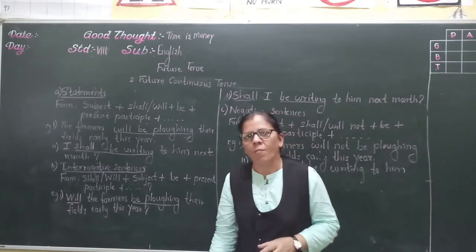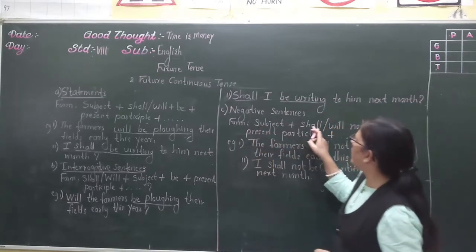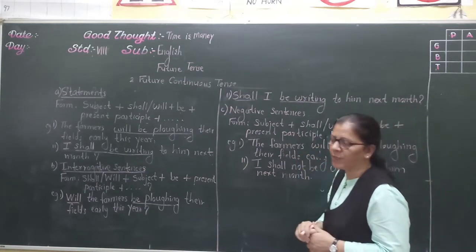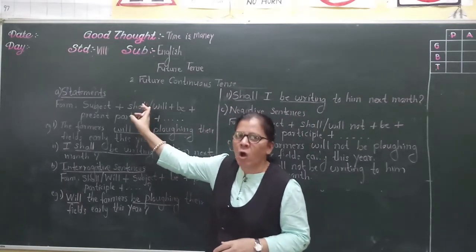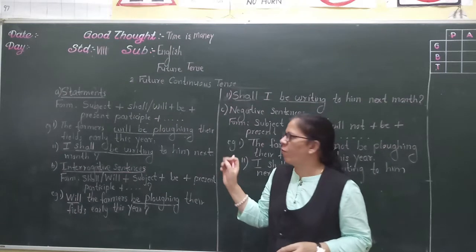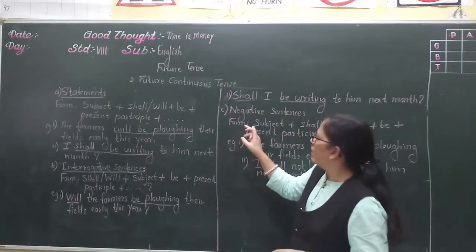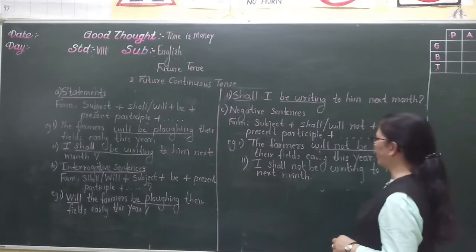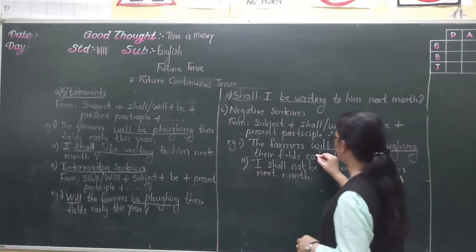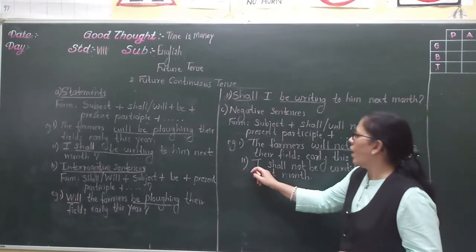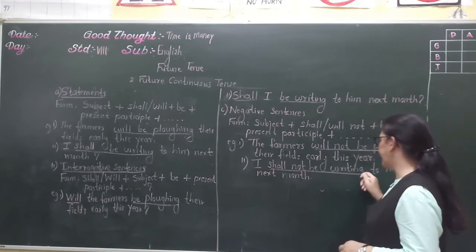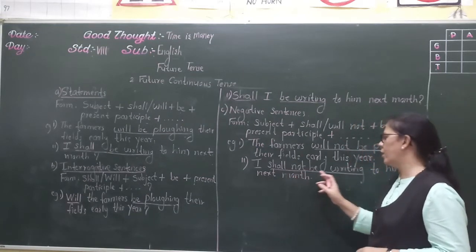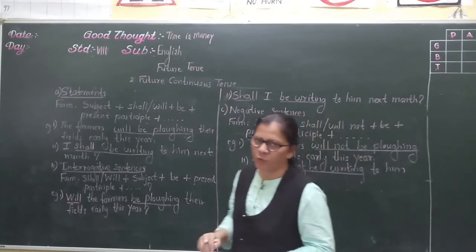Now let us see the form in negative sentences: subject plus shall or will not plus be plus present participle plus remaining part of the sentence. You only need to add 'not' after 'shall' or 'will'; the other form is the same as statements. For example: 'The farmers will not be plowing their fields early this year.' 'I shall not be writing to him next month.' This is the form of future continuous tense.